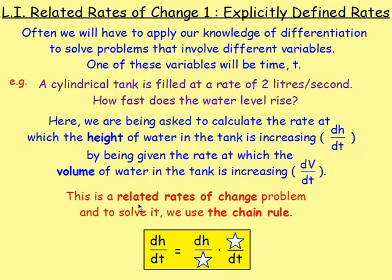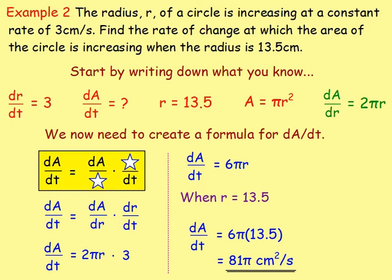These are known as related rates of change problems, and we solve them using the chain rule. Because we want to work out dh/dt, we set up: dh/dt equals dh/d(something) times d(something)/dt, and the somethings have to be the same. Start by writing down everything that you know. Because the radius is increasing at 3 centimetres per second, dr/dt equals 3. You want to find dA/dt, and you're told the radius is 13.5.